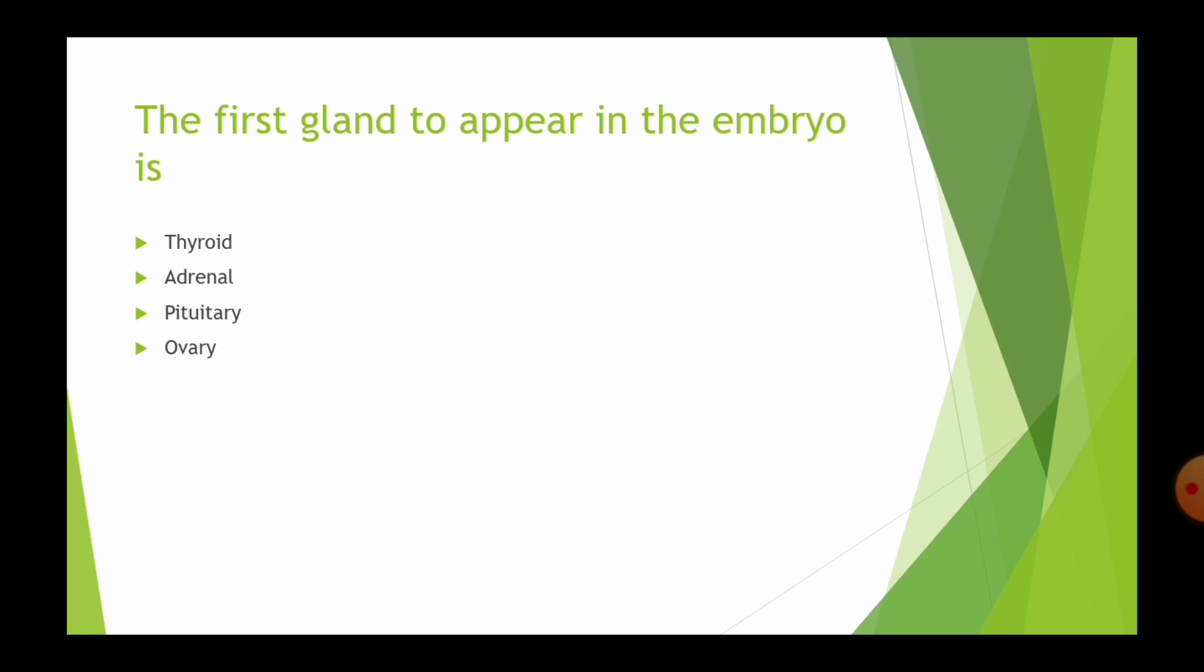The first gland to appear in the embryo is Thyroid gland, Adrenal gland, Pituitary gland and Ovary. Which is the first gland to appear in the embryo? Right answer is thyroid.